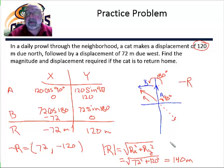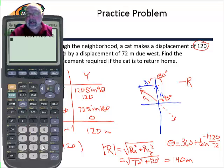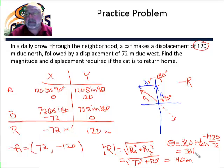So let's set that up. Theta equals 360 degrees plus the inverse tan of the y component, which is negative 120, over the x component, which is 72. Let's bring up our friendly neighborhood calculator again. So we have 360 plus inverse tangent of negative 120 divided by 72. And that gives us 301 degrees.